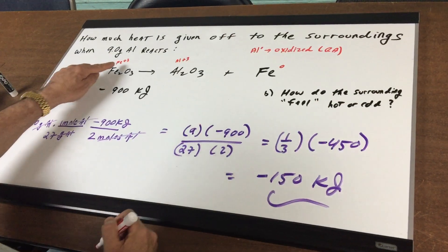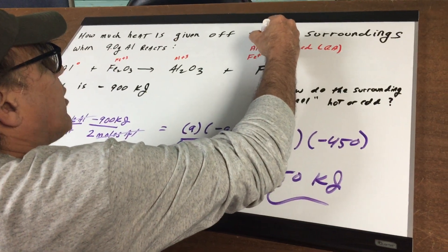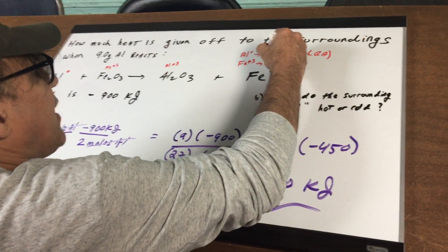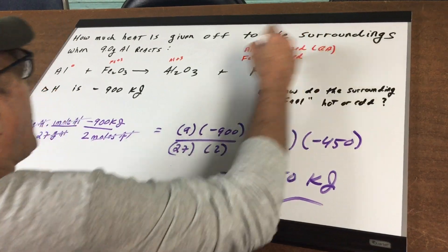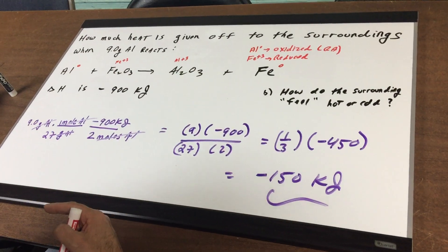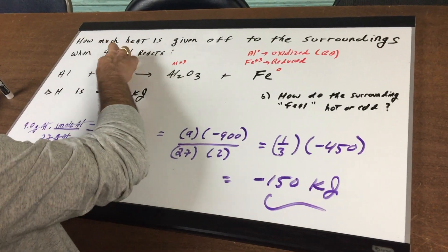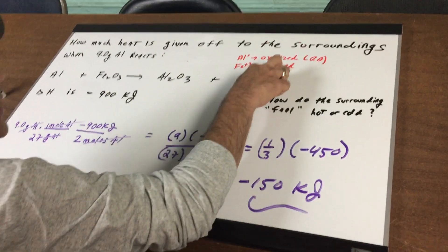And iron plus three is going to iron, so that means that the iron plus three is being reduced, and the entire complex here would be the oxidizing agent. Okay, so that you should know in itself.